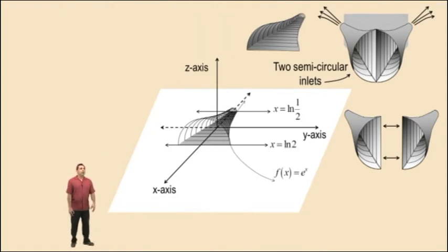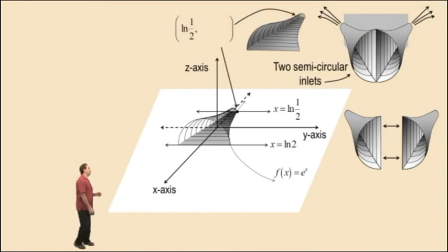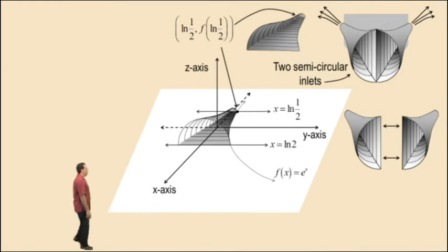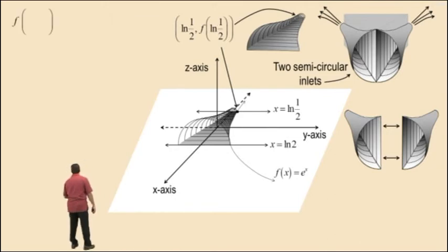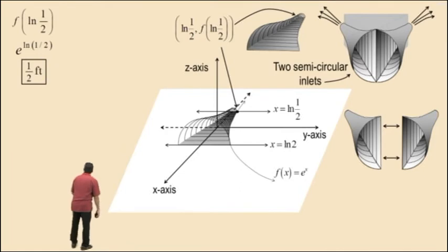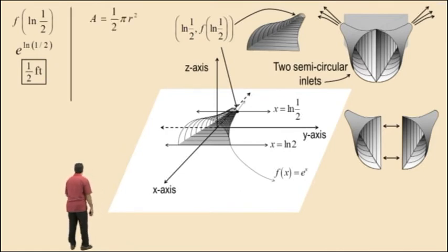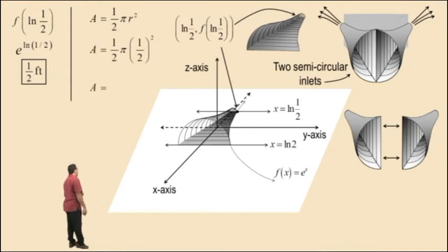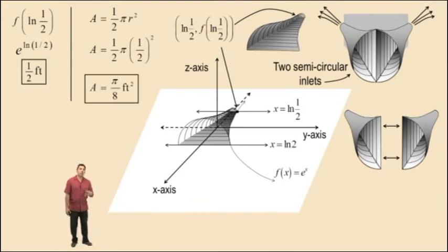Next, we will find the area of a semi-circular outlet. To do so, we look at the ordered pair natural log of 1 half, f of natural log of 1 half, where f of natural log of 1 half represents the radius of an individual outlet. So to find this radius, we need to evaluate f of natural log of 1 half, which is e to the natural log of 1 half, which ends up being 1 half — and that's 1 half of a foot. Therefore, to find the area of the outlet, we use the equation 1 half pi r squared, replace r with 1 half, and that gives us an area of pi over 8 feet squared for the outlet.